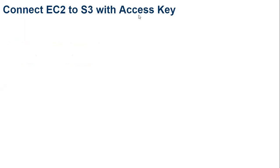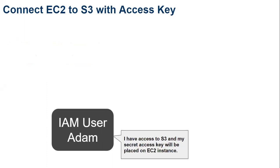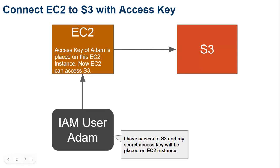Let's look at the flow of what we are going to implement. Consider we have an IAM user Adam, and Adam has access to S3 — that means user Adam has all the rights to access S3. Adam also has a secret access key, and this access key we are going to place on the EC2 instance so that the EC2 instance can access S3.